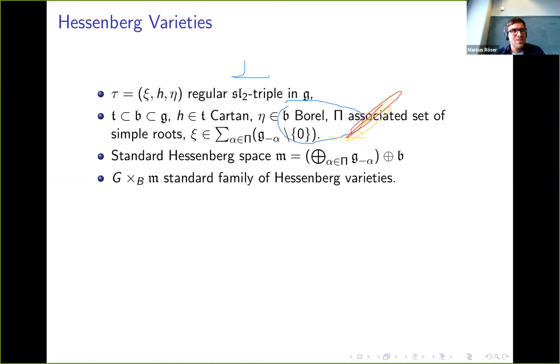Let me tell you quickly what Hessenberg varieties are, or what kind of Hessenberg varieties you are interested in. We have again a regular SL2 triple, and this gives us a natural choice of Cartan and Borel, and by π we denote the associated set of simple roots. It turns out that ξ is a linear combination of negative non-zero simple root vectors, one for each simple root.